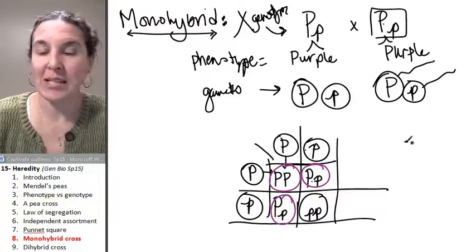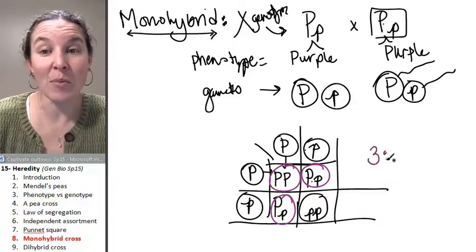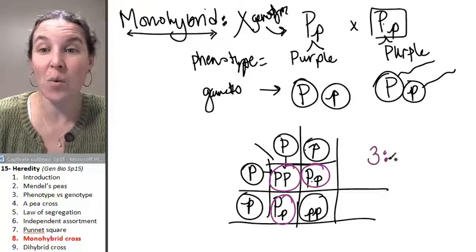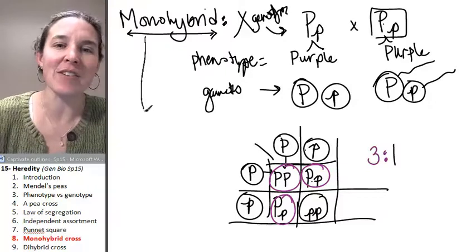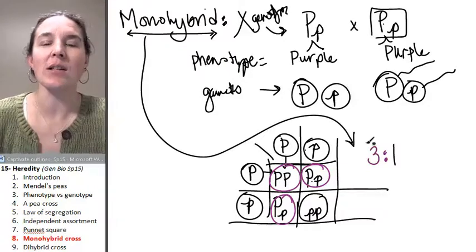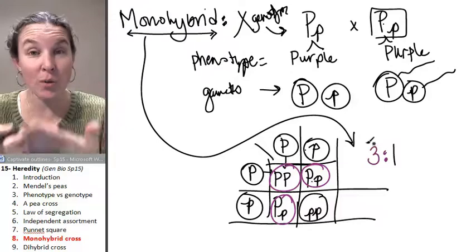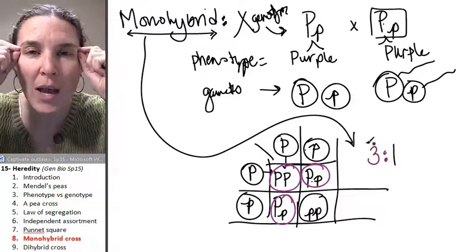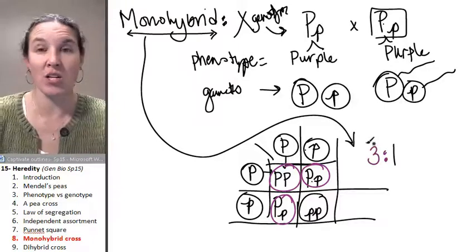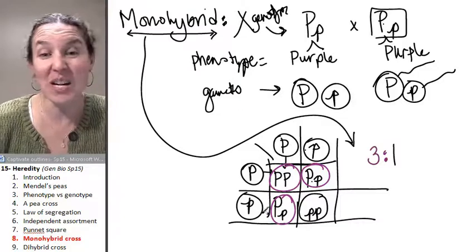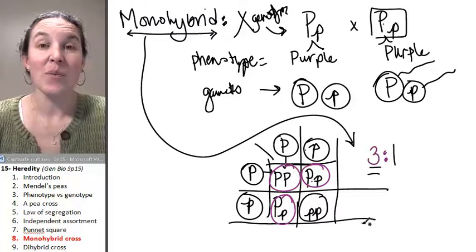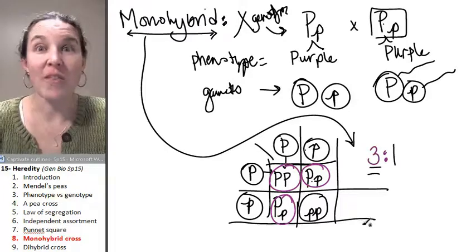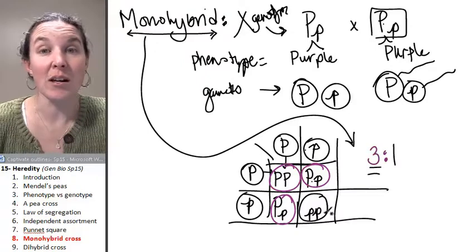If you count them up, you will see that we have three purple flowers for every one white flower. That's my phenotypic ratio and that's the definition of a monohybrid cross. A monohybrid cross where we cross two heterozygotes always results in a three to one ratio. You don't have to do the Punnett square if you don't want to. You can totally know that 75% of my babies are going to be, what's the word, purple.